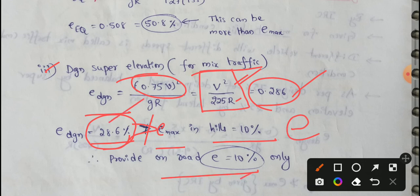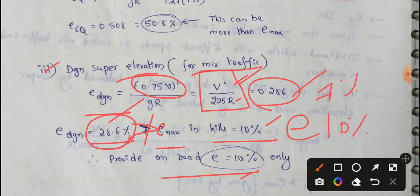As per IRC, the maximum super elevation is 10%. So checking the values: E No.1, E No.2, E No.3 are compared accordingly. The design super elevation result is 5% and 10% as per the IRC para reference.